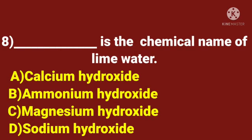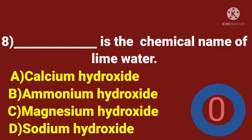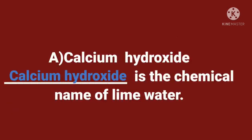Eighth question. What is the chemical name of lime water? A. Calcium hydroxide. B. Ammonium hydroxide. C. Magnesium hydroxide. D. Sodium hydroxide. Time starts now. The answer is calcium hydroxide. Calcium hydroxide is the chemical name of lime water.